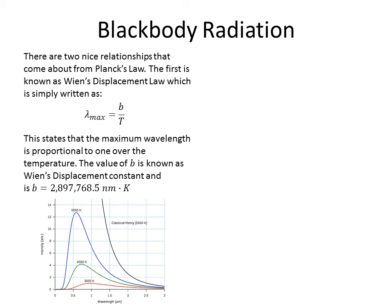So, back to Wien's displacement law. If we notice, this is our peak temperature. Our temperature has a peak here, the warmer the object, and the lower the wavelength.